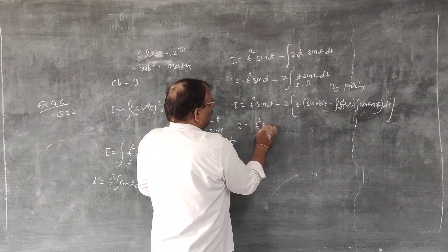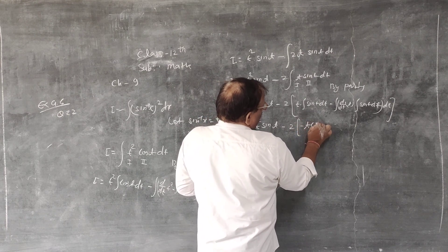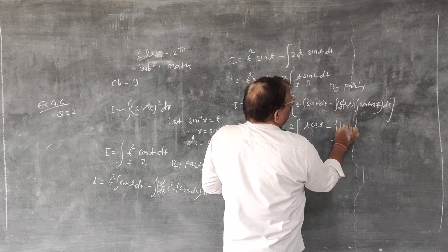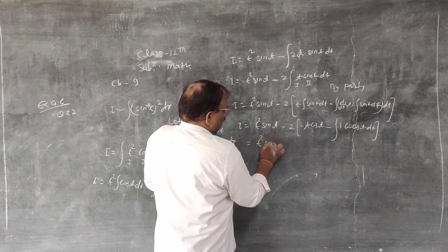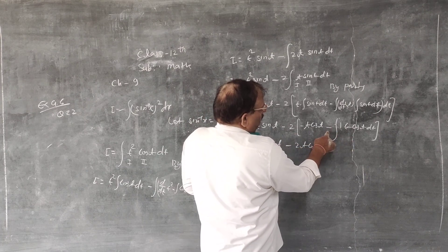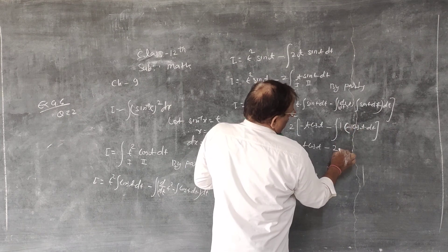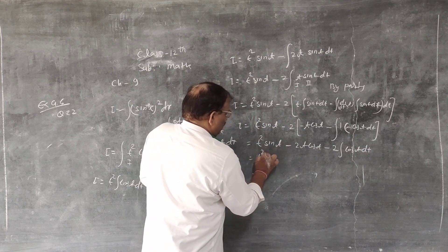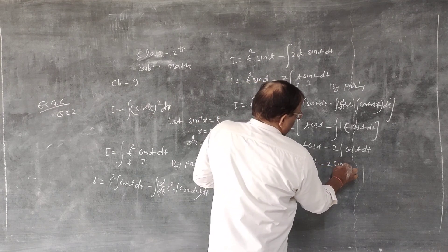Applying by parts again: ∫t sin t dt = t(−cos t) − ∫(−cos t) dt = −t cos t + sin t. Substituting back: i = t² sin t − 2(−t cos t + sin t) + c. Therefore i = t² sin t − 2t cos t + 2 sin t + c. Wait, the final result is i = t² sin t − 2t cos t − 2 sin t + c.